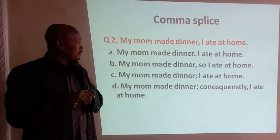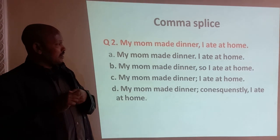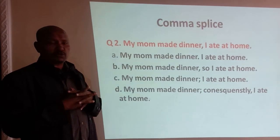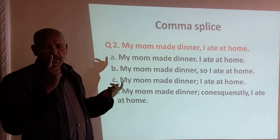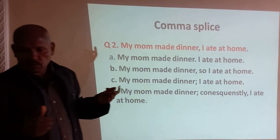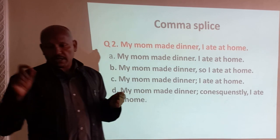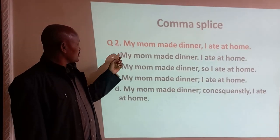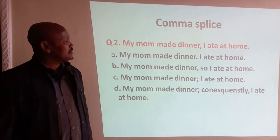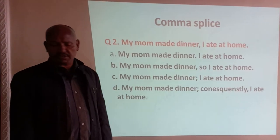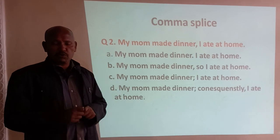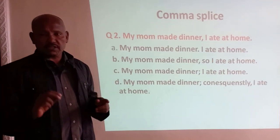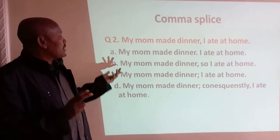The second example: 'My mom made dinner, I ate at home.' We have two independent clauses here — 'My mom made dinner' and 'I ate at home.' The first correction is to use a period: 'My mom made dinner. I ate at home.' Because we have two independent clauses, we can put a period between them to create a meaningful sentence.